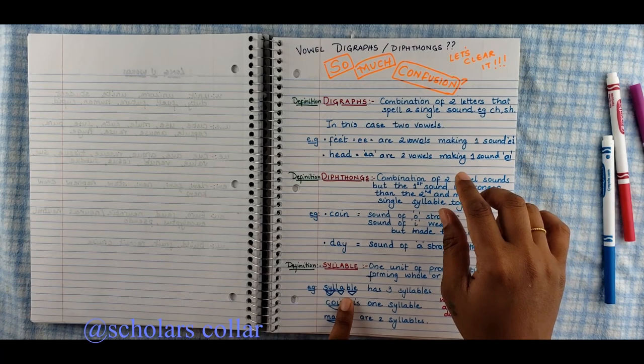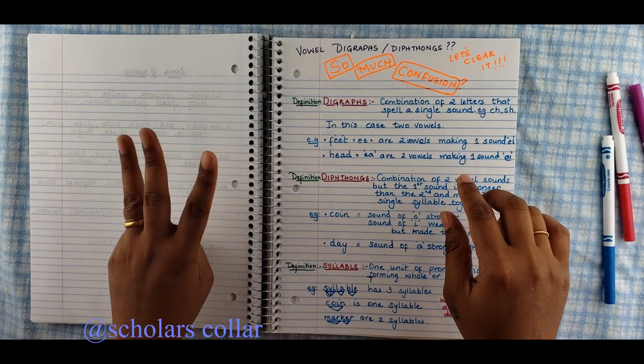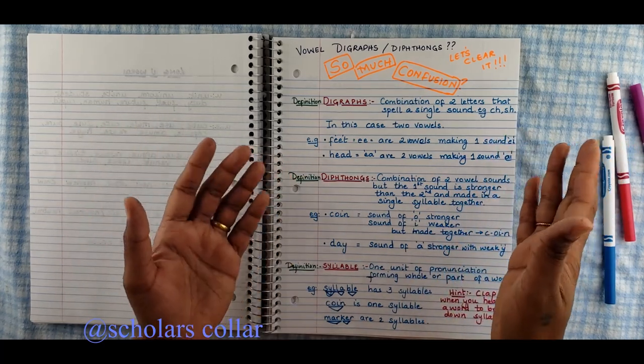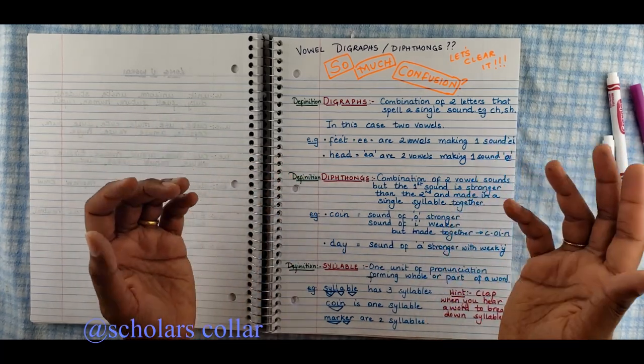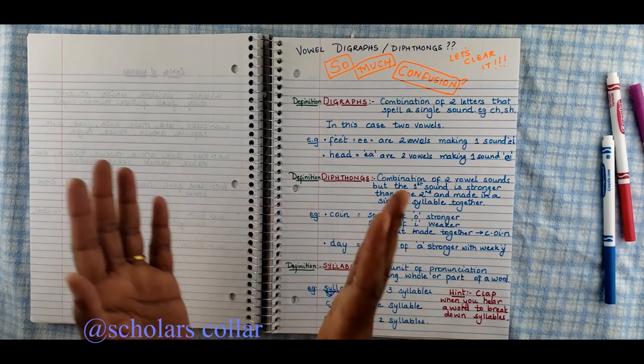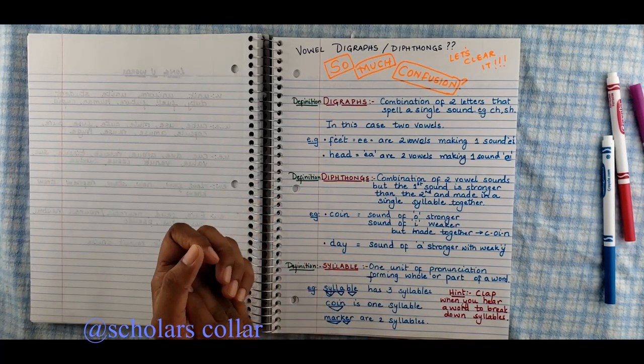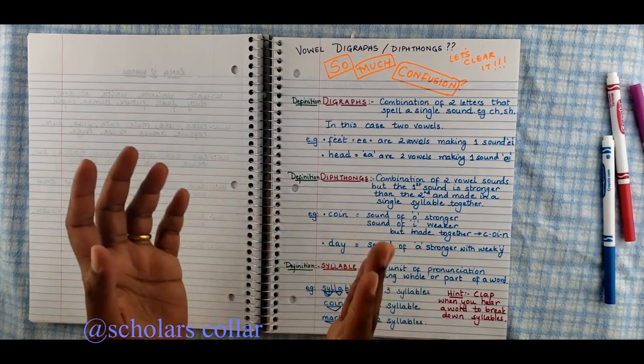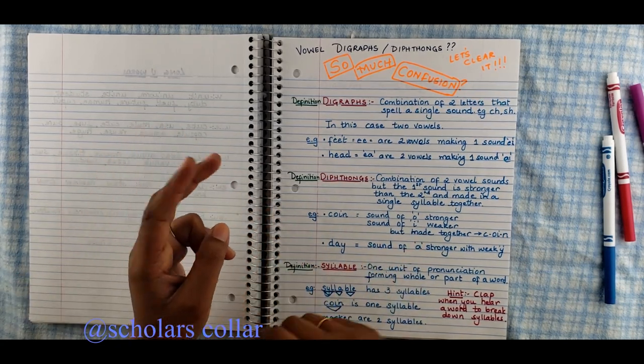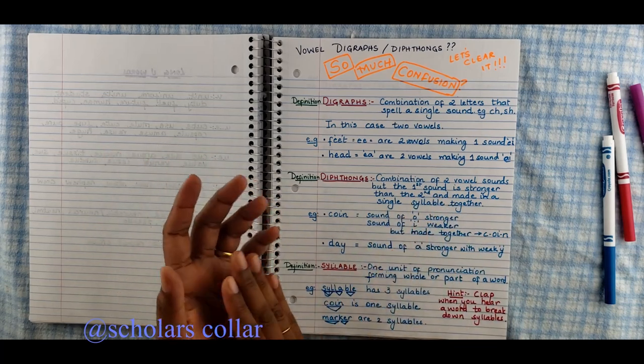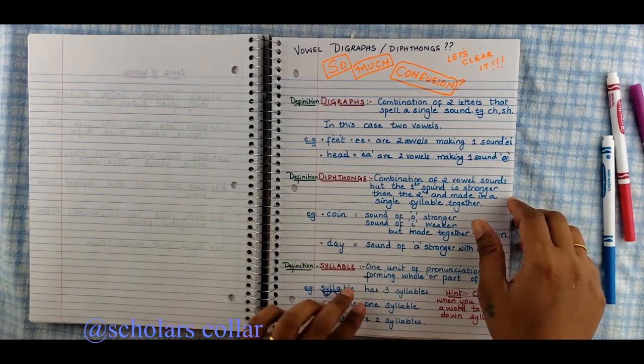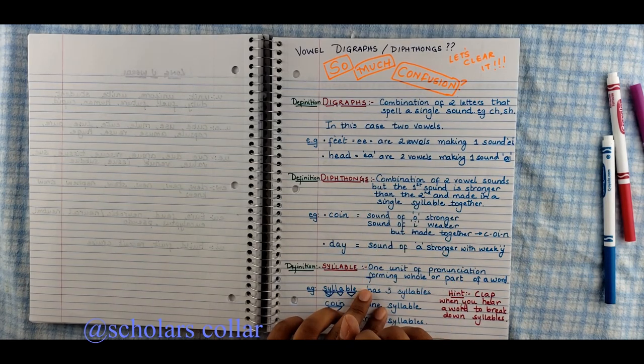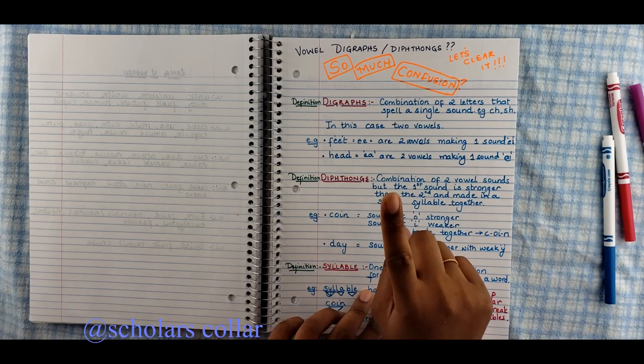Because the sound of o is stronger and the sound of i is weaker. Again in this word day, you can hear a and then you can hear e. So to understand diphthongs, the sound has to be in one syllable. Diphthong is making the sound both together in one syllable. This is so important with diphthong. To understand that you need to understand what is a syllable. Syllable is when you're pronouncing one unit of pronunciation forming the whole part of a word.